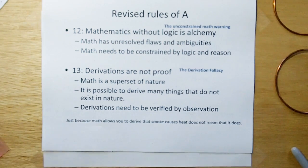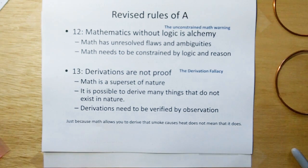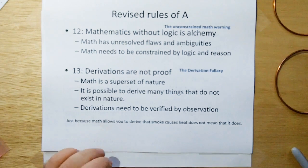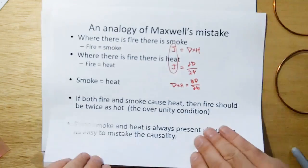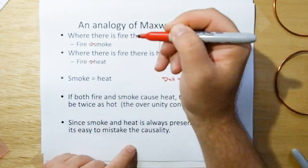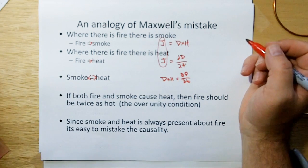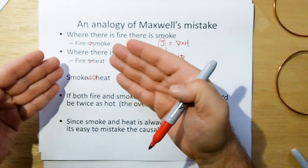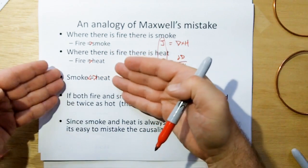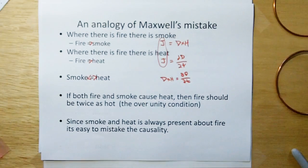So, we're going to be revising the rules of acquisition. We're adding or replacing rule of acquisition 12 with mathematics without logic is alchemy. Math has unresolved flaws and ambiguities. Math needs to be constrained by logic and reason. And what we can do here is if we were to put a particular symbol here that fire causes smoke and fire causes heat, then if you try to put these together, you would get something like this, which would say that's not workable because you're missing the cause. And so we're going to add symbols to mathematics to infer the causality so you don't get these bad causal relationships and fraudulent derivations, which Maxwell has.